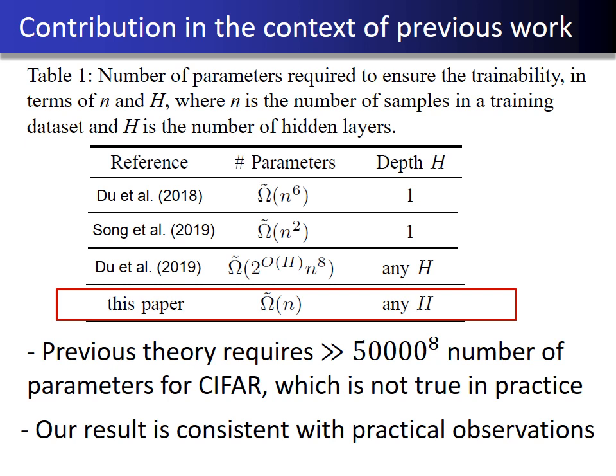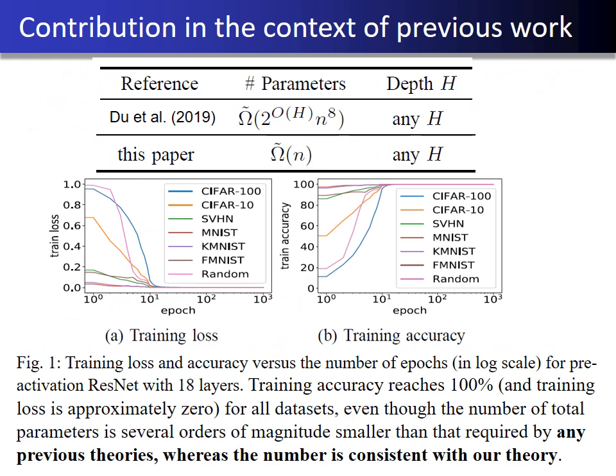Importantly, there is a significant gap between practice and previous theories. For example, previous theory requires much more than 50,000 to the 8th power parameters for CIFAR-10, which is not true in practice. In terms of the size of the networks, our result is consistent with practical observations. Figure 1 illustrates this fact with various datasets and a pre-activation ResNet with 18 layers, which is widely used in practice. The figure plots training loss and accuracy versus the number of epochs. Training accuracy reaches 100% and training loss is approximately 0 for all datasets, even though the number of total parameters is several orders of magnitude smaller than required by any previous theories, whereas the number is consistent with our theory.